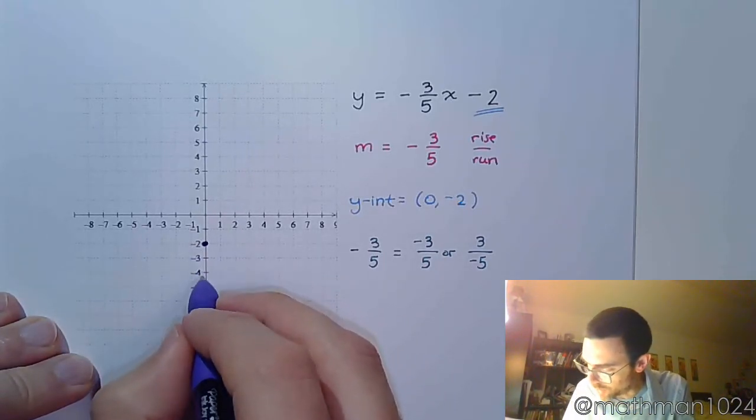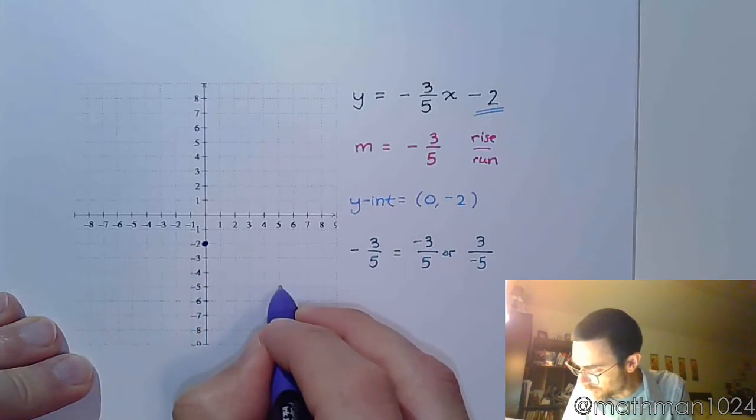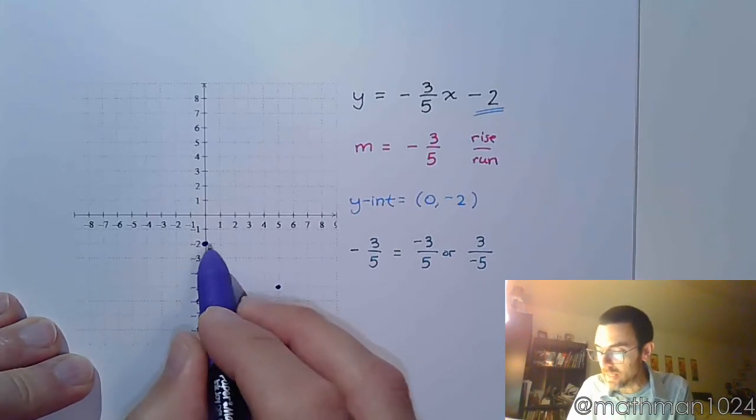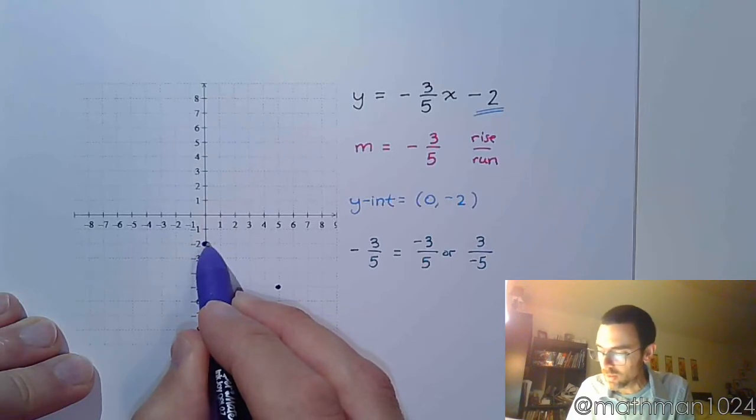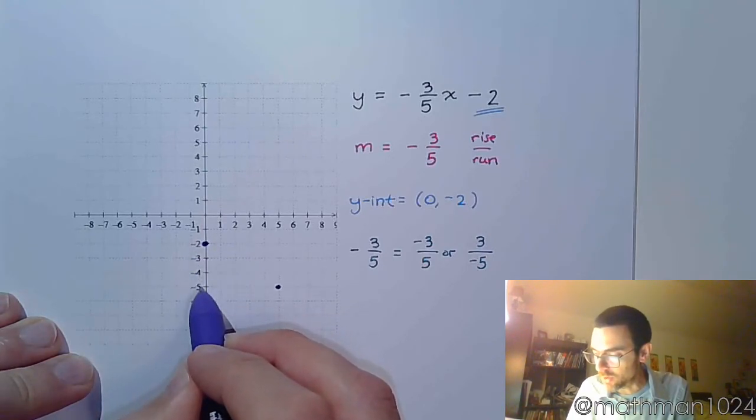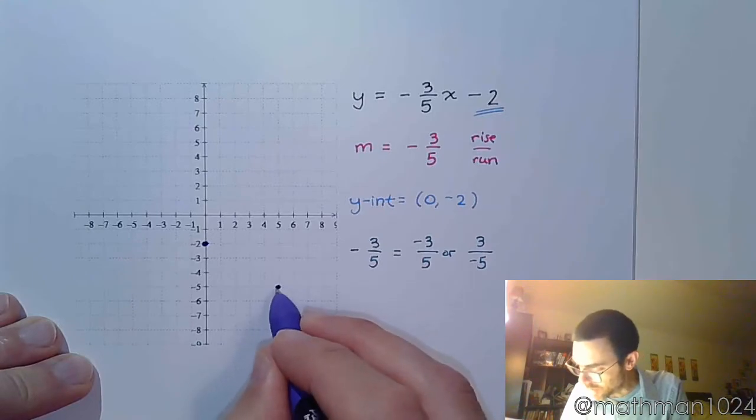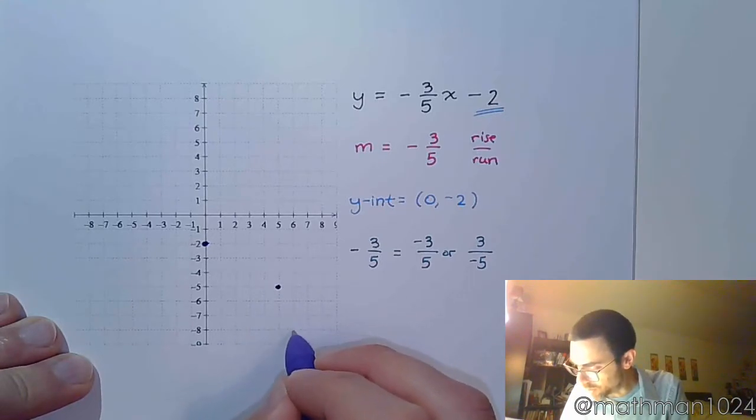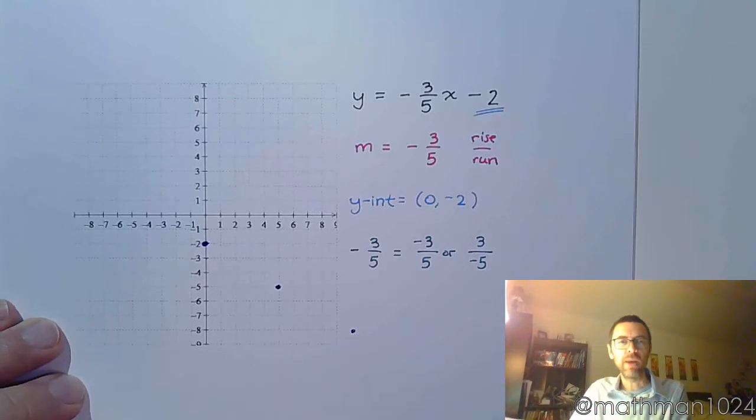From here, I'm going to go down 3 units and over 5. Make sure you count correctly. This is not 1. That's 1, 2, 3, and over 1, 2, 3, 4, 5. Do that again: 1, 2, 3, and over 1, 2, 3, 4, 5 should be about right there.